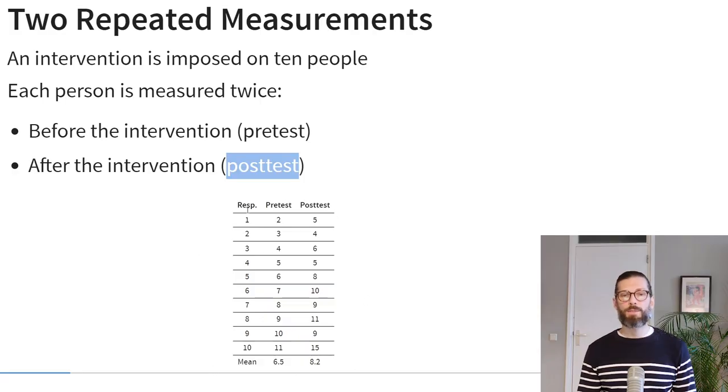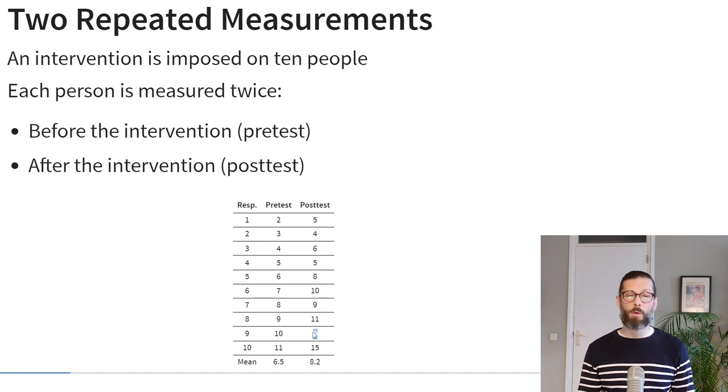Now let's look at some applied examples with repeated measures, starting with a simple example with just two measurements. We collected data from 10 participants, each measured twice — once before an intervention (pretest) and once after (posttest). For example, respondent 1 had a pretest score of 2 and a posttest score of 5, so they went up. Respondent 9 had a pretest score of 10 and a posttest score of 9, so they went down.